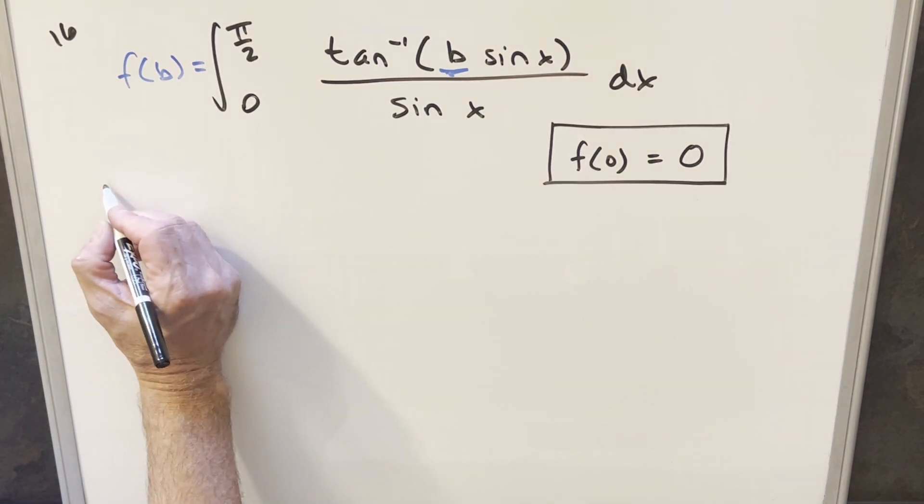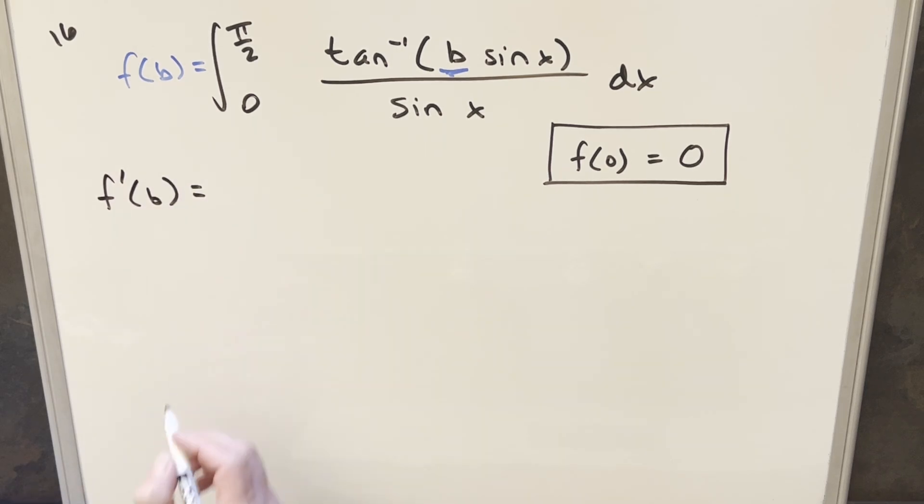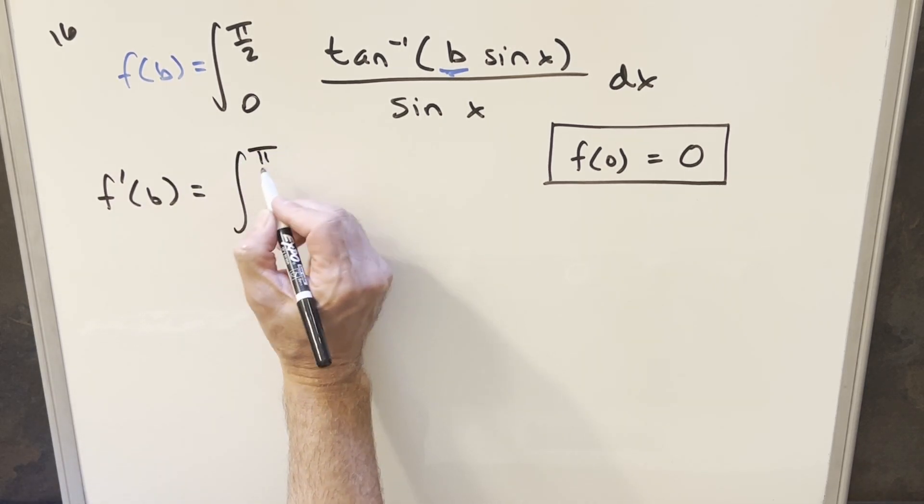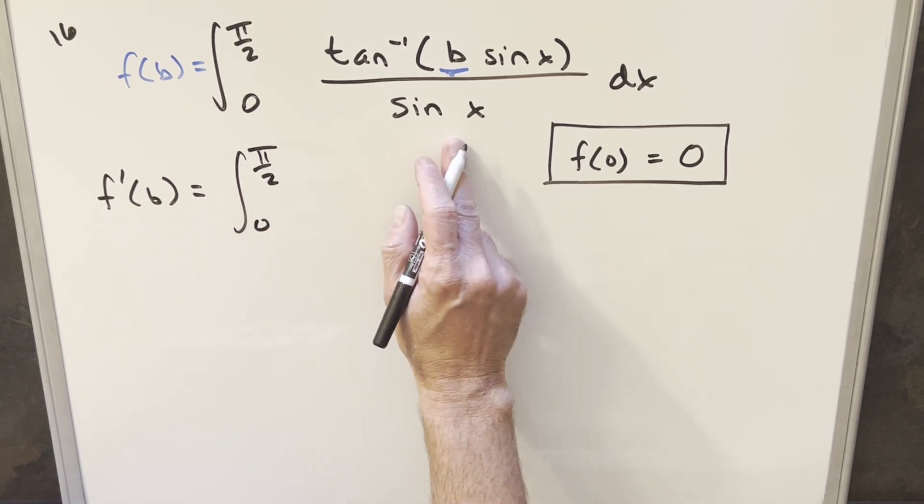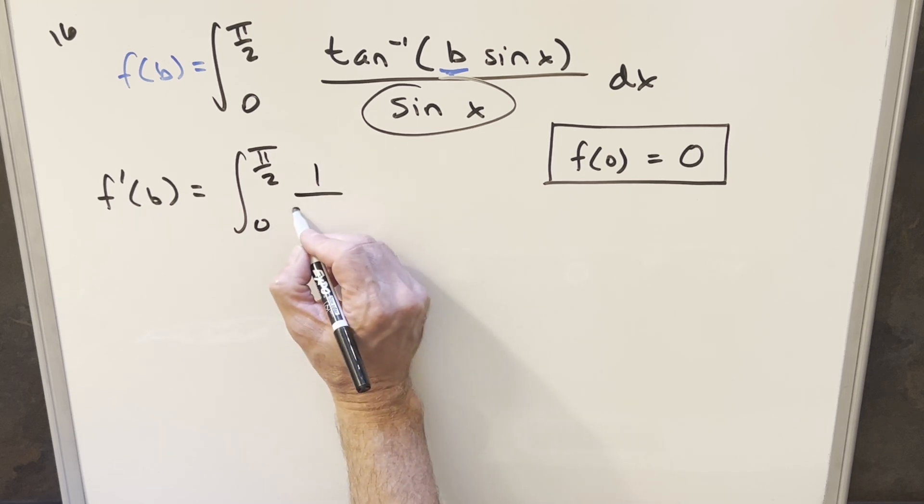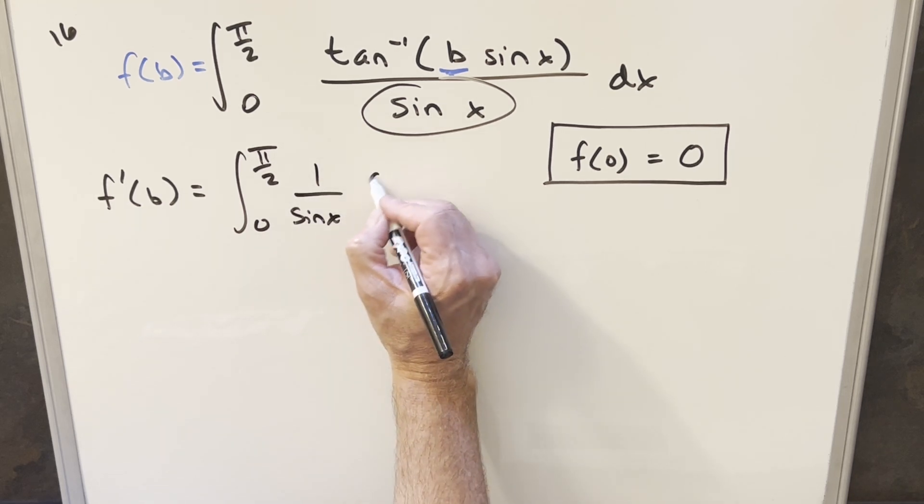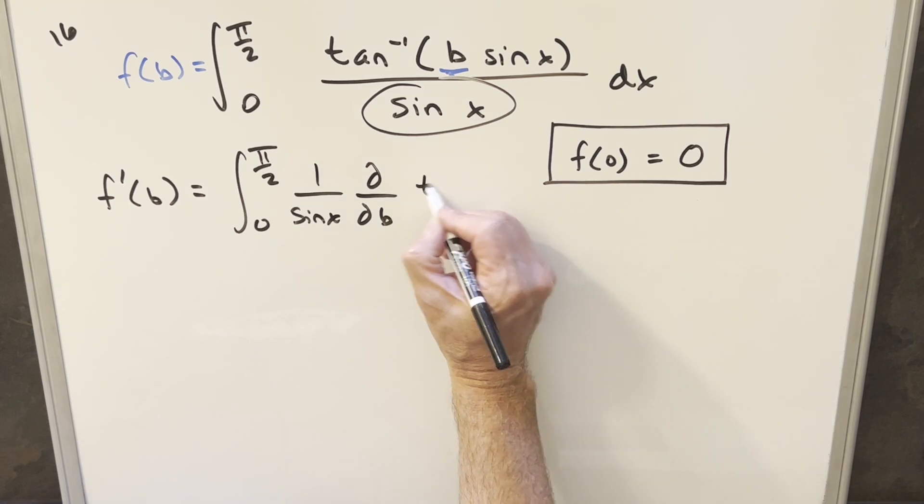Now, for my first step with this, let's just find F prime of b. Let's find a derivative with respect to b. And what I'm going to want to do is, let's differentiate as a partial inside the integral. So doing this, the sine x, there's no b in here, so this is just going to be a constant. We'll bring this up front of the derivative, differentiate with respect to b of just the arctan b sine x.